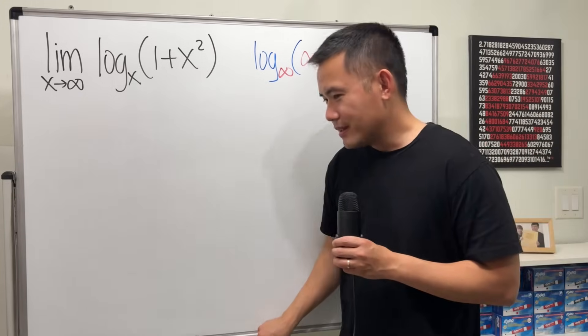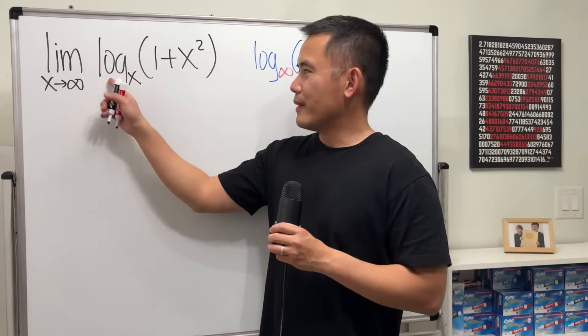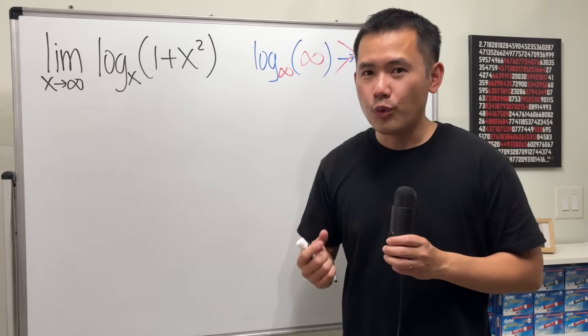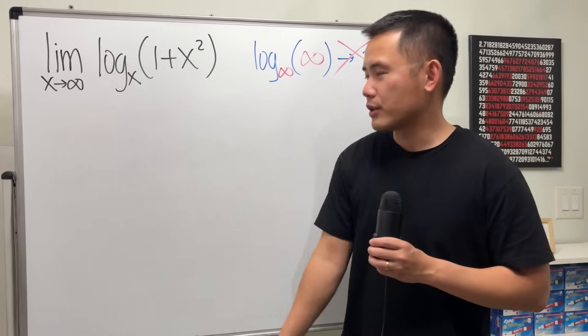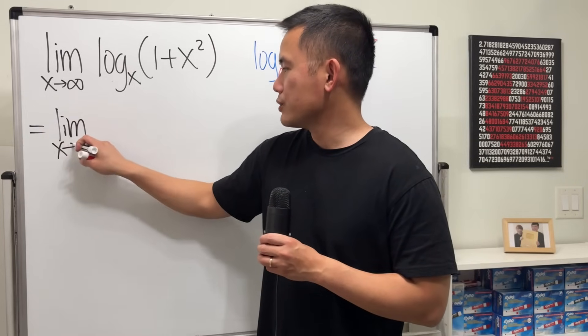Anyways, this is secretly an indeterminate form because we can use the change of base formula to write it into a form that we actually know better. This is the limit as x approaching infinity.